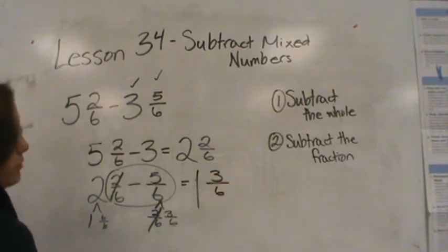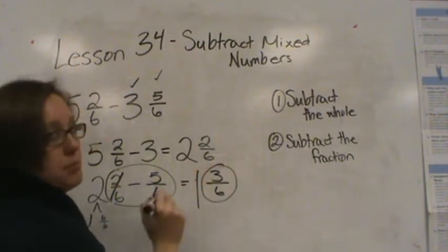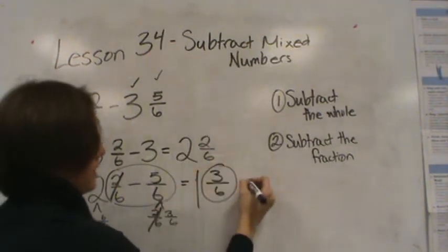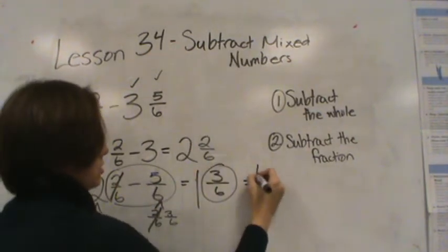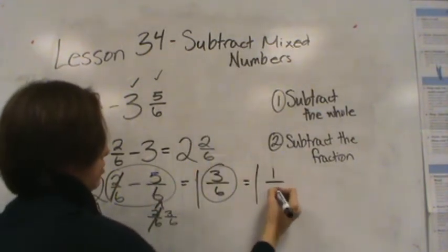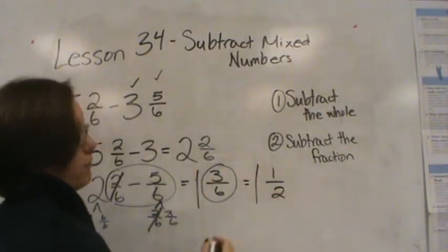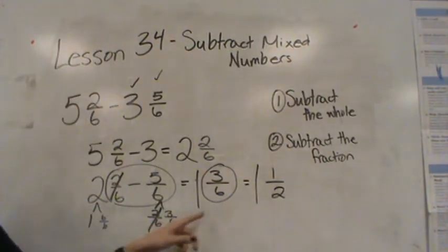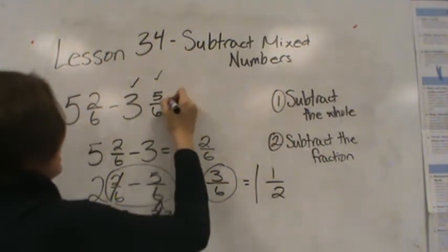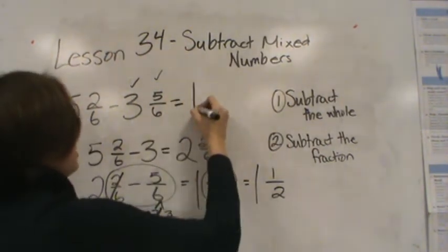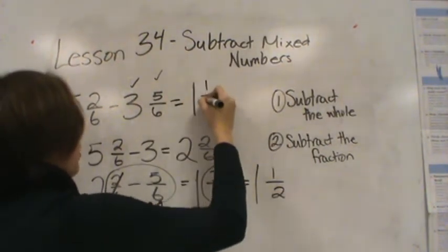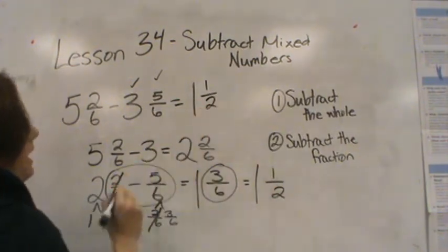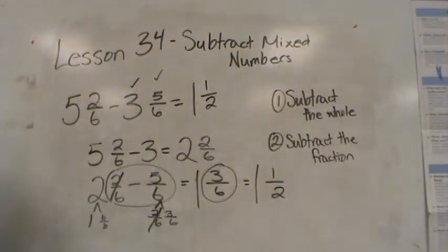Now remember, 3/6 is not in simplest form. 3/6 is equivalent to 1/2. 1/2 is the simplest form of 3/6. So the final answer here is 1 and 1/2 if you were to put it in simplest form.